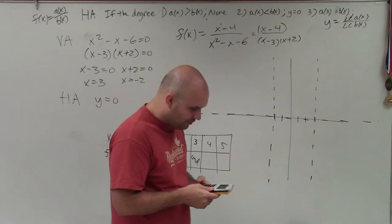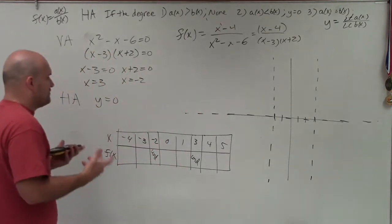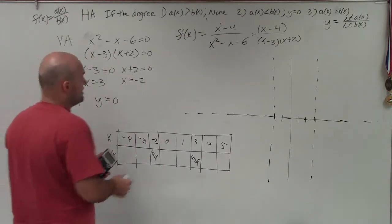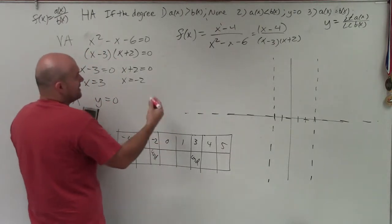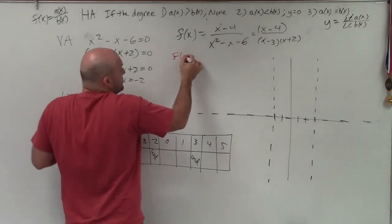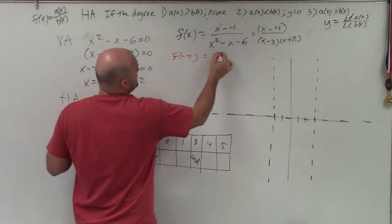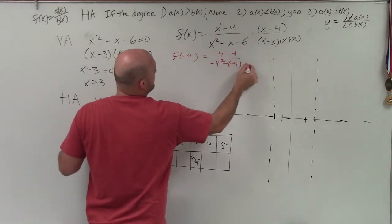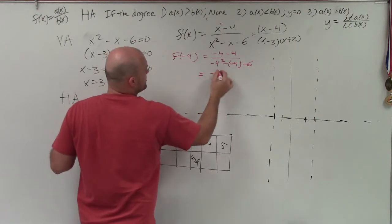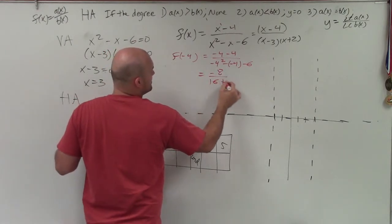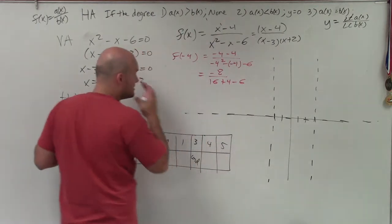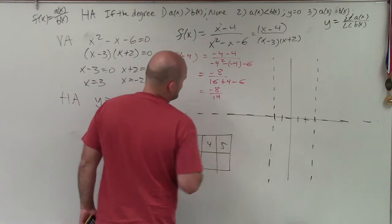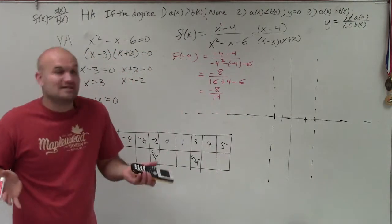Now, I am going to use graphing technology because, at least in my class, I expect students to be able to identify these points, but then they can always use graphing technology to figure them out. So to evaluate for these points, you could plug them into each of one of these equations. For instance, if I wanted to evaluate this and I didn't have a calculator, then you'd have to evaluate. So you'd evaluate for negative 4, which is equal to negative 4 minus 4 divided by negative 4 squared minus a negative 4 minus 6, which is equal to negative 8. That becomes 16 plus 4 minus 6, which is equal to negative 8 over 14. And then you'd find that decimal approximation and then graph it.